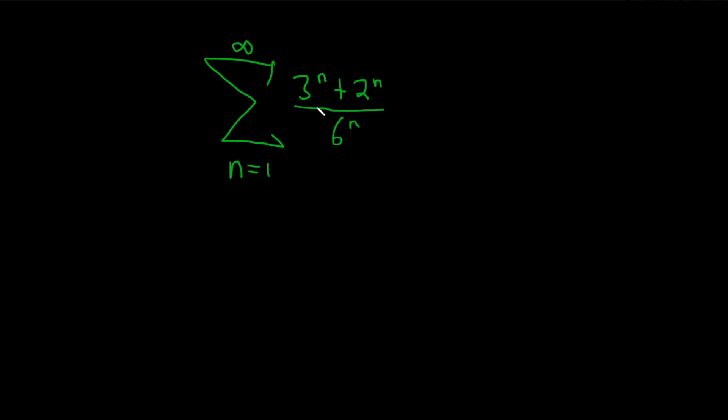So to figure this out, we're going to break this up into two individual series, and both of these series will actually converge. So first note, we can write this as the infinite sum, as n runs from 1 to infinity,